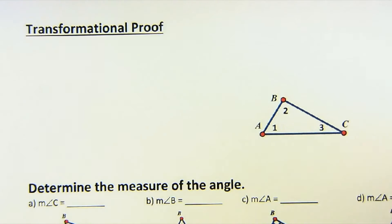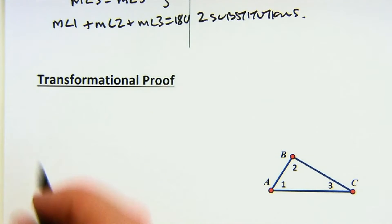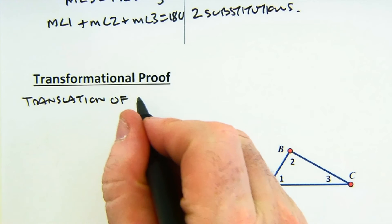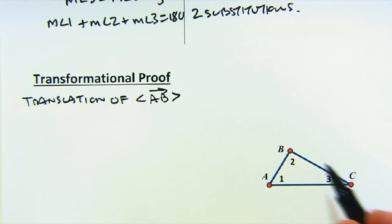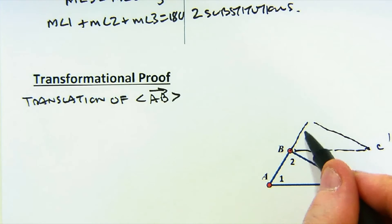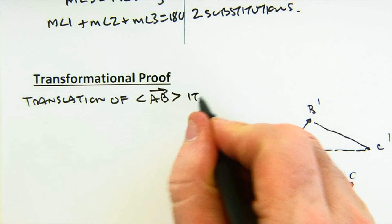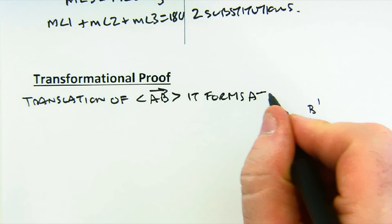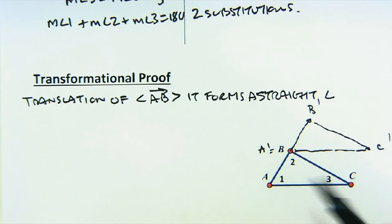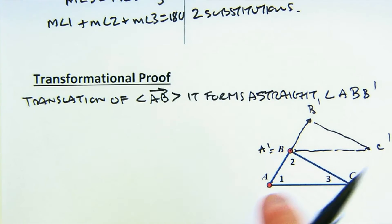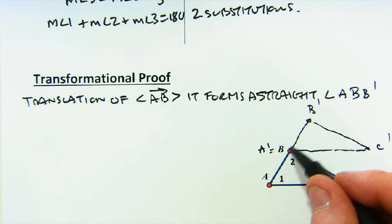So the way I want us to think about it is I'm going to do a translation of—I think I'm going to slide it by vector AB. So what would happen is that along this ray we would continue along. C would move to a location like this: C prime, B prime here, A prime equals this. So let's mention that. So if I translate my triangle ABC by vector AB, it forms a straight angle AB, B prime. So because I followed that same vector, it will continue and form a straight angle AB, AB prime.